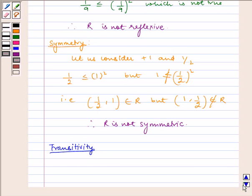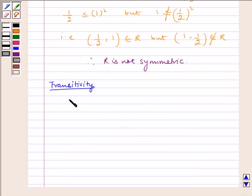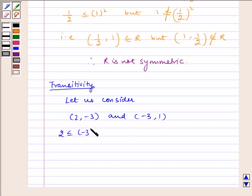Let us consider (2, -3) and (-3, 1). Now, 2 ≤ (-3)² is true, and